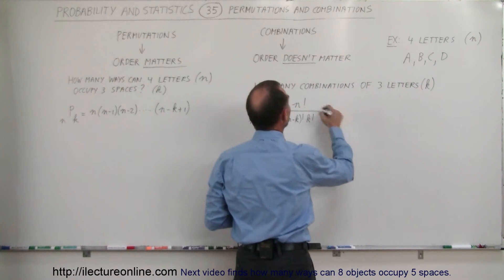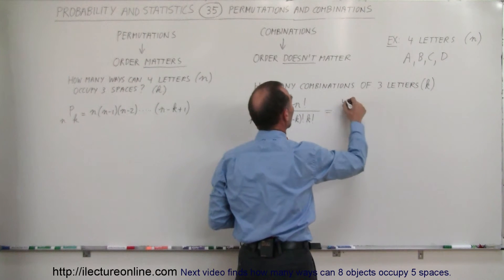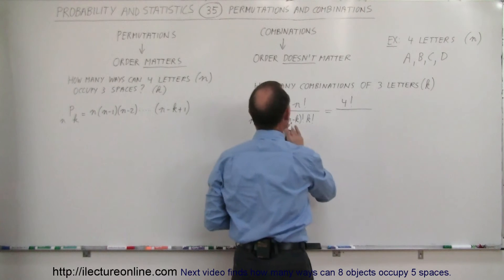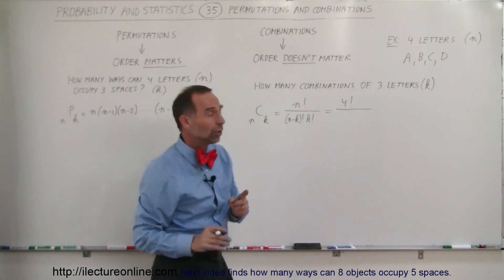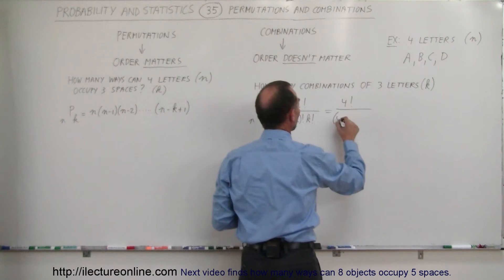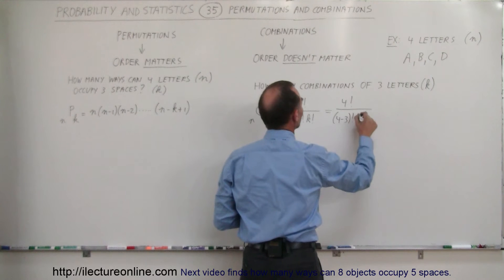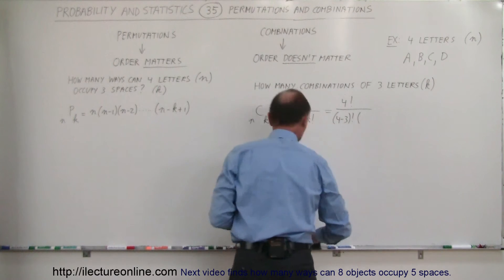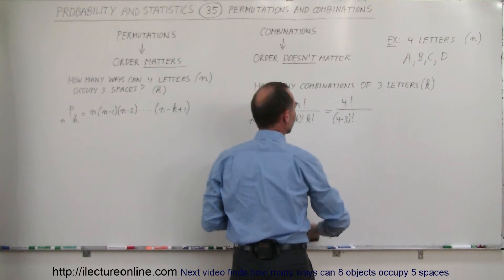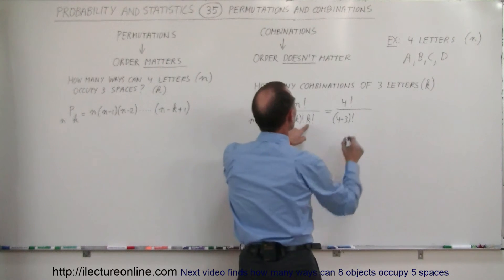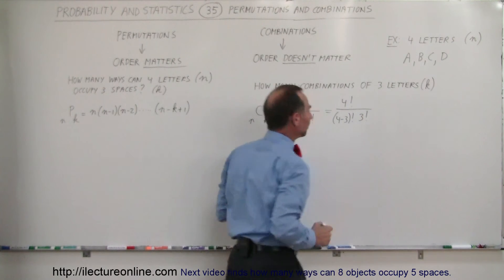This is equal to N, since there's four letters, we go four factorial divided by N minus K. Well, N is four, K is three, that would be four minus three factorial times K factorial, times K which is three factorial.